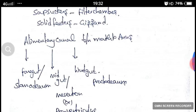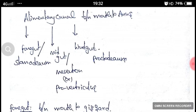The alimentary canal is extended between mouth to anus. The alimentary canal is divided into three parts: foregut, midgut, and hindgut respectively.